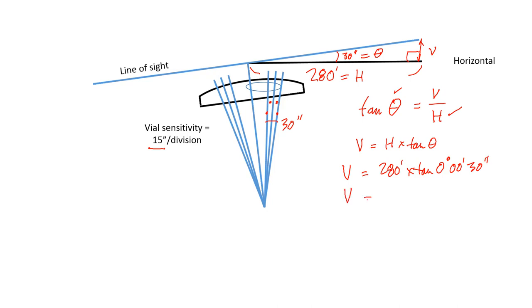Once I crunch this through my calculator, I get a vertical error in this case of 0.041 feet. That is my vertical error here at a distance of 280 feet from the instrument when my instrument is 30 arc seconds out of level.